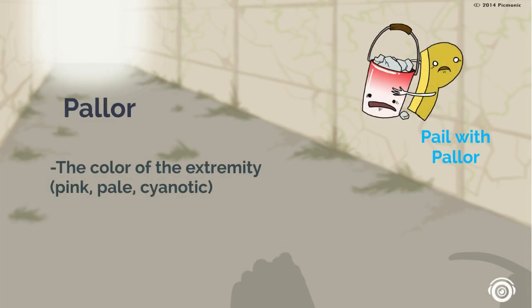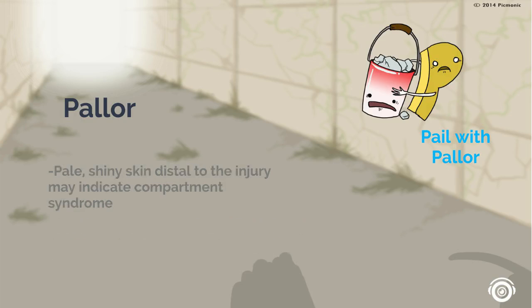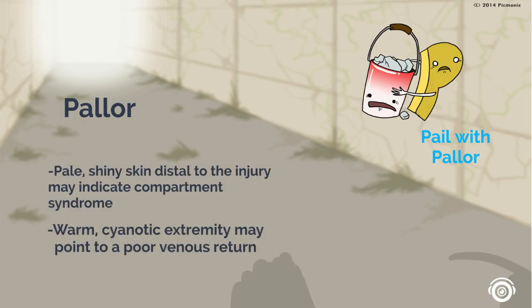Pallor refers to the color of the extremity — pink, pale, or cyanotic — and should be assessed along with temperature (hot, warm, cool, cold) against the unaffected side. Pale, shiny skin distal to the injury may indicate compartment syndrome, while a warm cyanotic extremity may point to poor venous return.